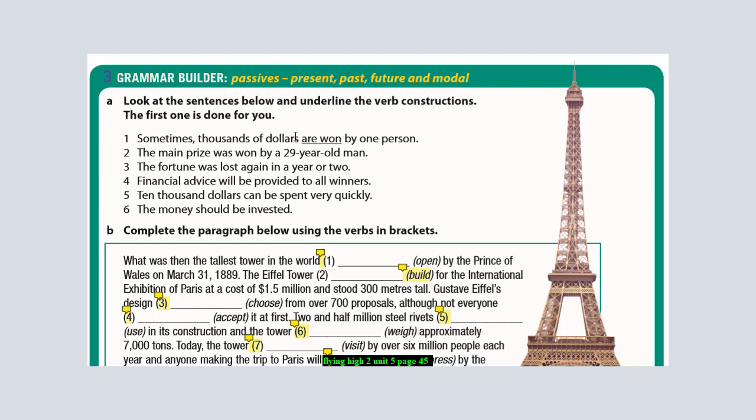Before we start about the passive, we should all know what's the meaning of passive. As we know, the passive means that we do not know who does the action. Let's have a quick look at the exercise here. Look at the sentence below and underline the verb construction. The first one is done for you.